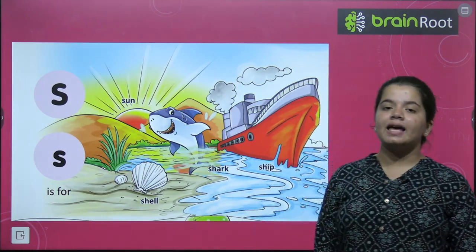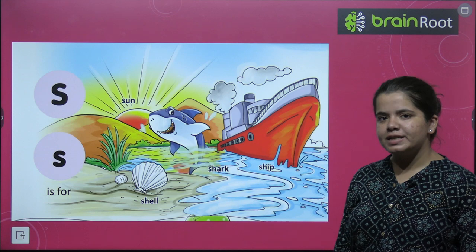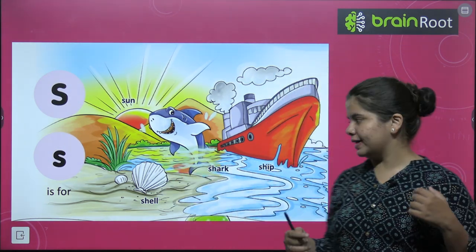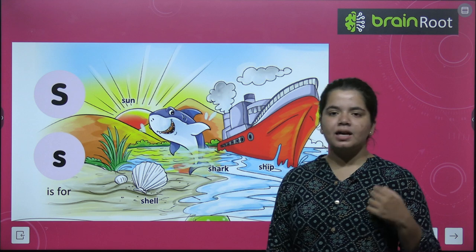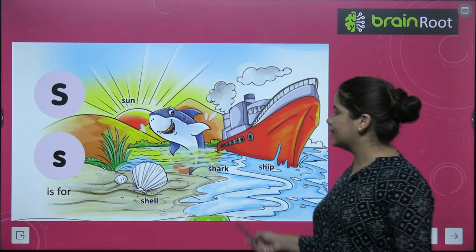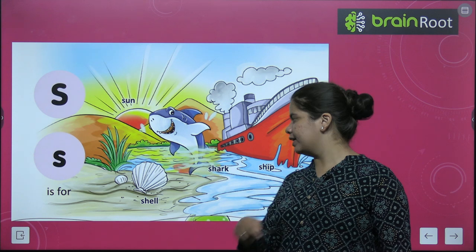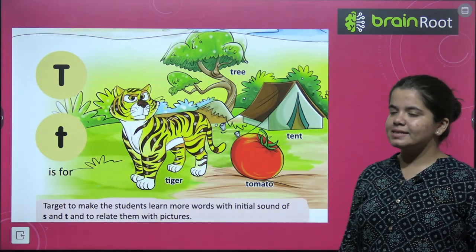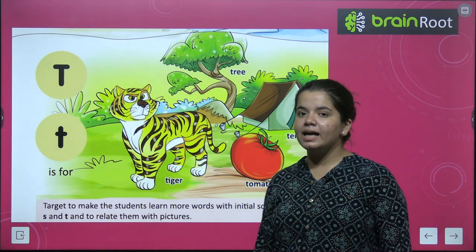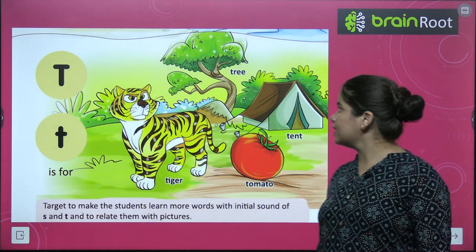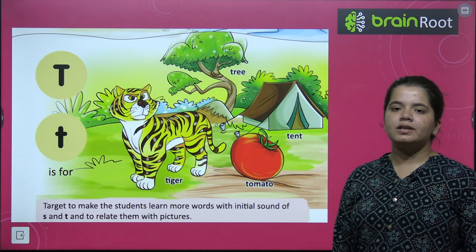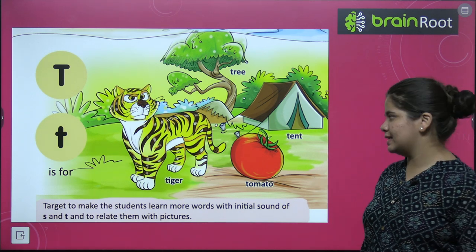Next is S. S for sun, S for ship — ship ki photo de rakhi hai — S for shark, S for shell. Very good. Next is T. Padhiye mere saath saath. T for tiger, T for tree, T for tomato, T for tent.